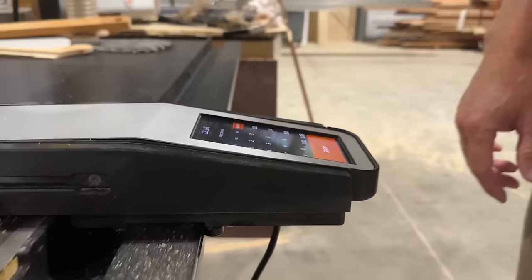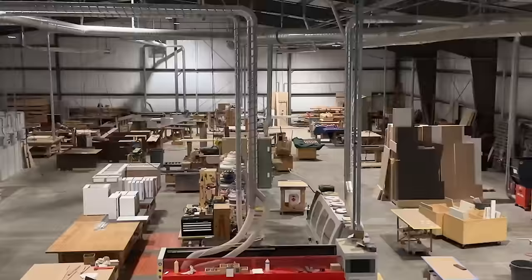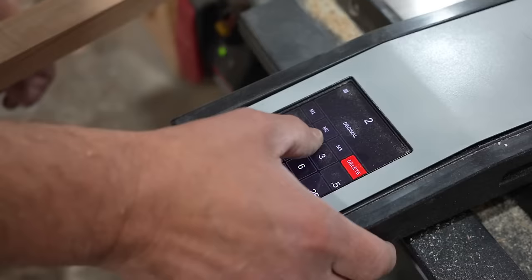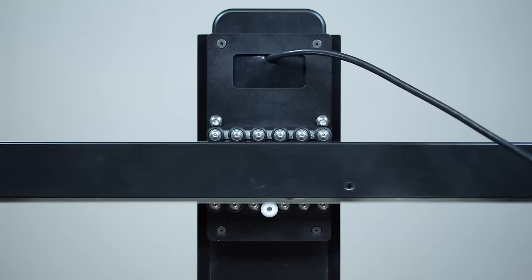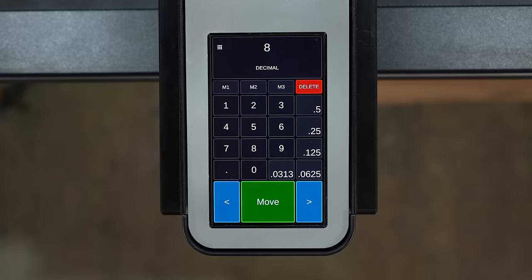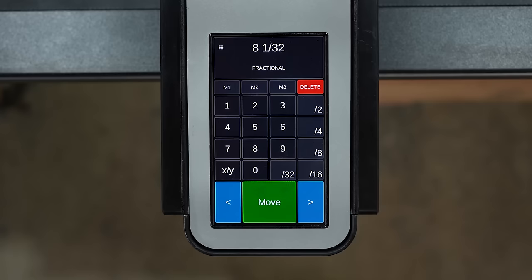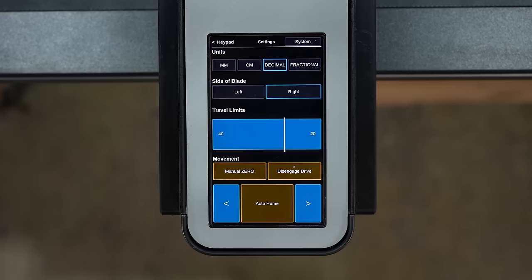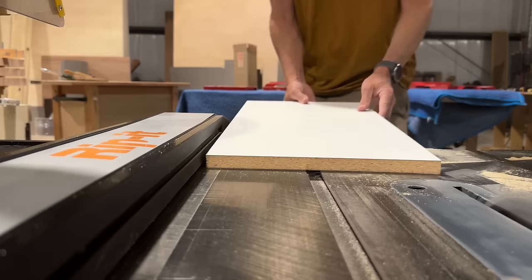The RipIt 2.0 is an advanced automated table saw fence designed for easy retrofitting to most existing table saws, enhancing their precision and rip cuts. Controlled via a user-friendly touchscreen interface, users can input the desired cut width, prompting the fence to automatically adjust to the correct position. For fine-tuning, the fence can also be jogged manually. Crafted from durable materials, the RipIt 2.0 is built to last and comes with a warranty. Its benefits include exceptional accuracy for rip cuts up to 50 inches wide, increased speed compared to manual fences, ease of use with the touchscreen panel, and enhanced safety features to prevent accidents by keeping hands away from the blade. If you seek improved accuracy, efficiency, and safety for your table saw, the RipIt 2.0 is an excellent choice.